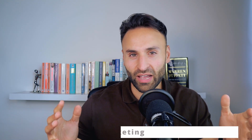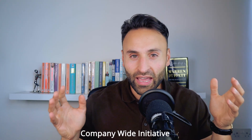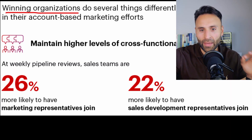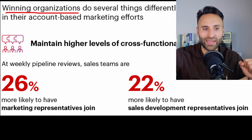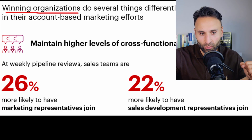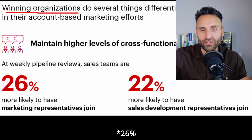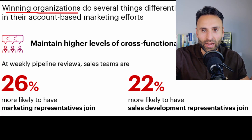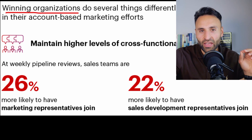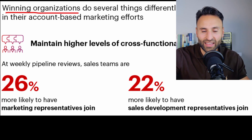Step number zero — a prerequisite — is to ensure sales and marketing are aligned. Account-based marketing should not just be looked at as a marketing initiative; it should be a company-wide initiative, especially relevant to sales and marketing. According to a study by Bain, winning organizations maintain higher levels of cross-functional collaboration, with 22% of sales teams having a marketing representative joining weekly pipeline reviews.